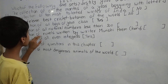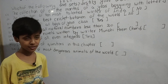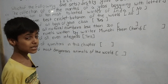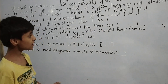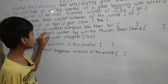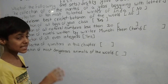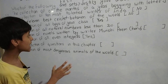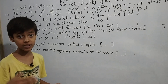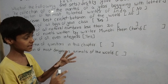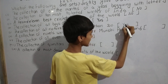Part (v): The collection of all natural numbers less than 100. Natural numbers are counting numbers: 1, 2, 3, 4, 5, 6... Less than 100 means 1 up to 99. If you ask me or any other person, we will give the same list. All elements are well defined, so this collection is yes — a set.